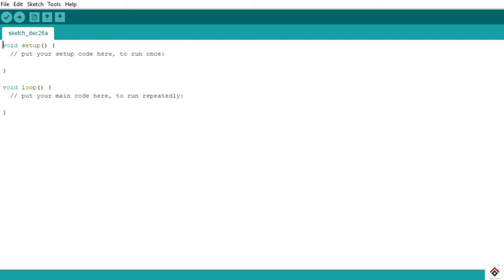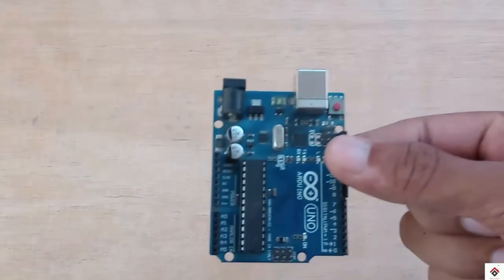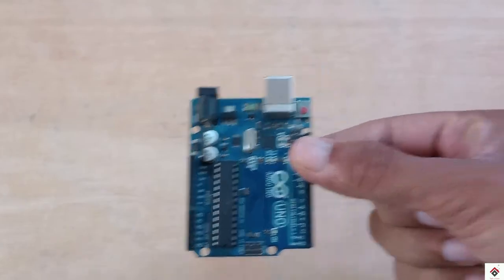For this, the components required are an Arduino board, a seven-segment display, one 330-ohm resistor, two push buttons, two 10-kilo-ohm resistors, breadboard, and some jumper wires.